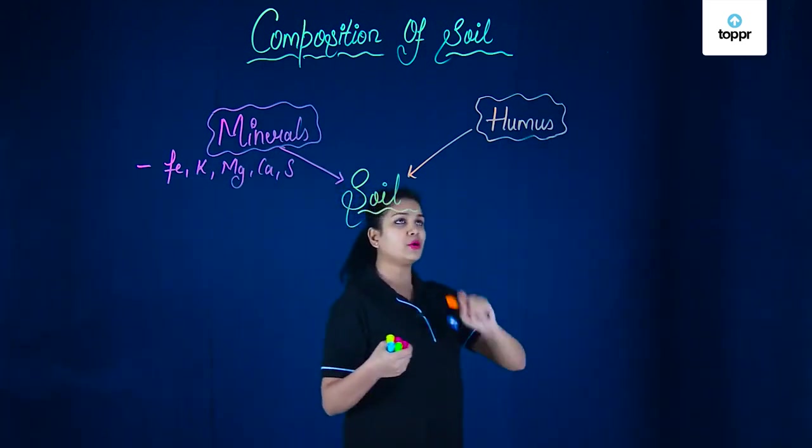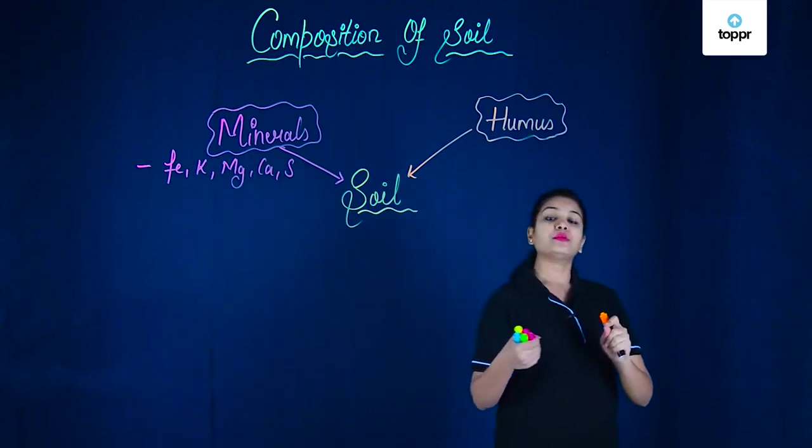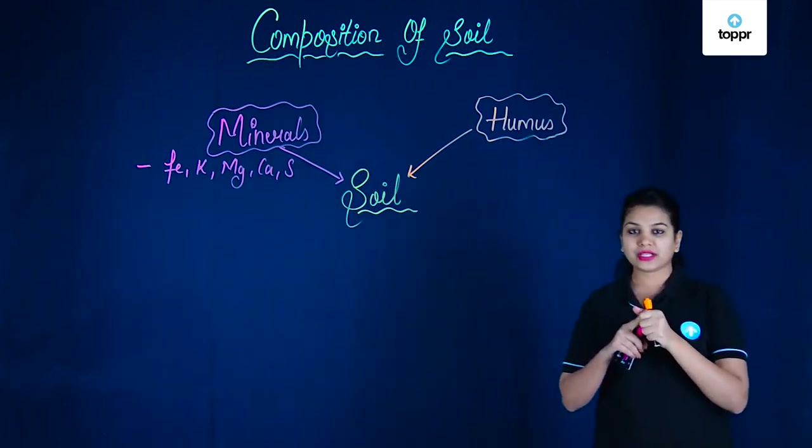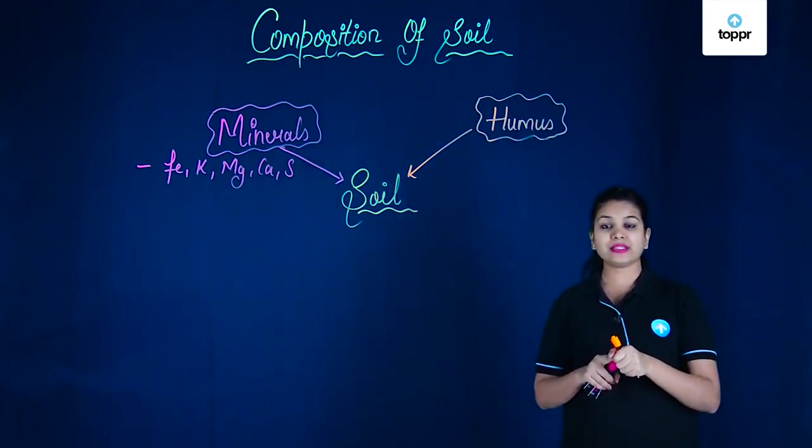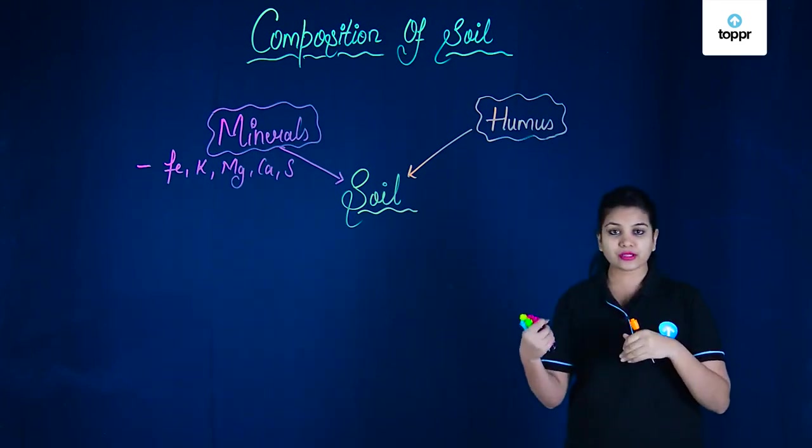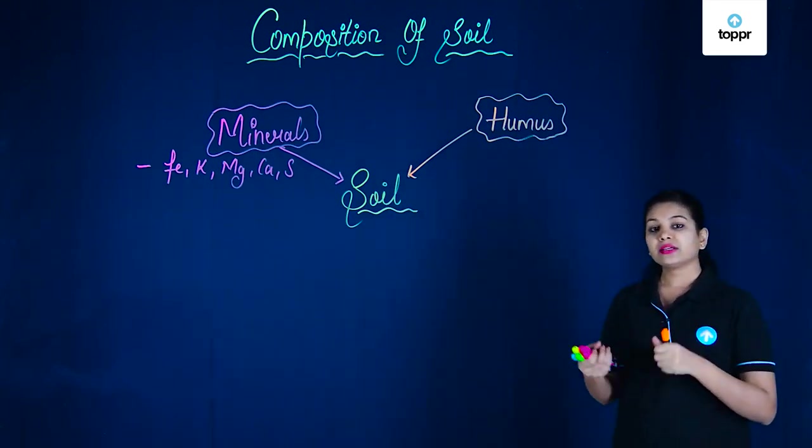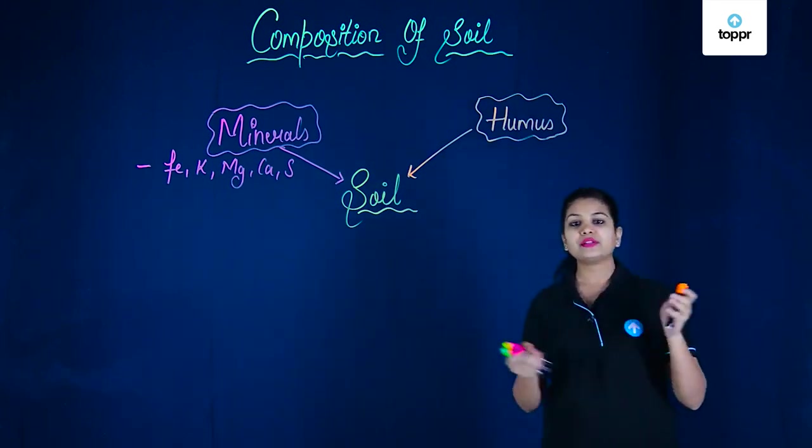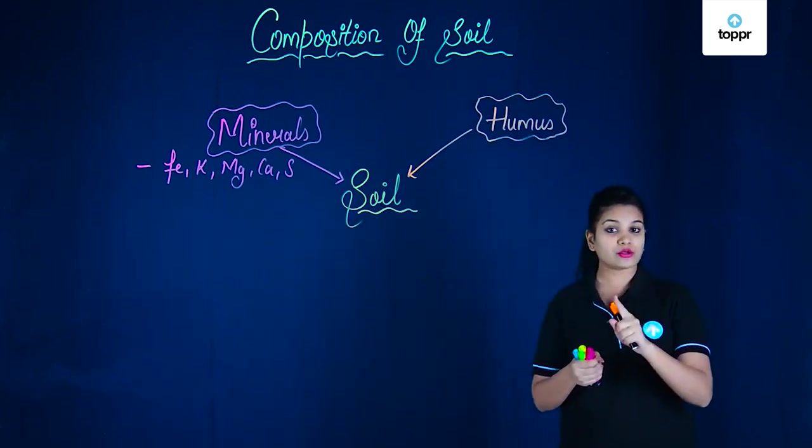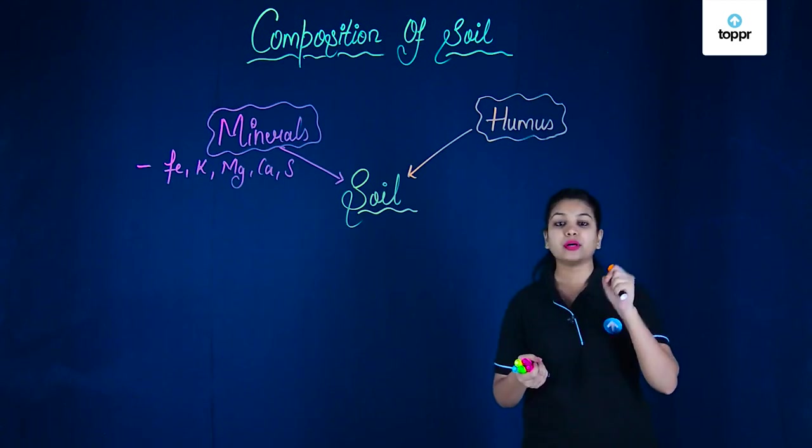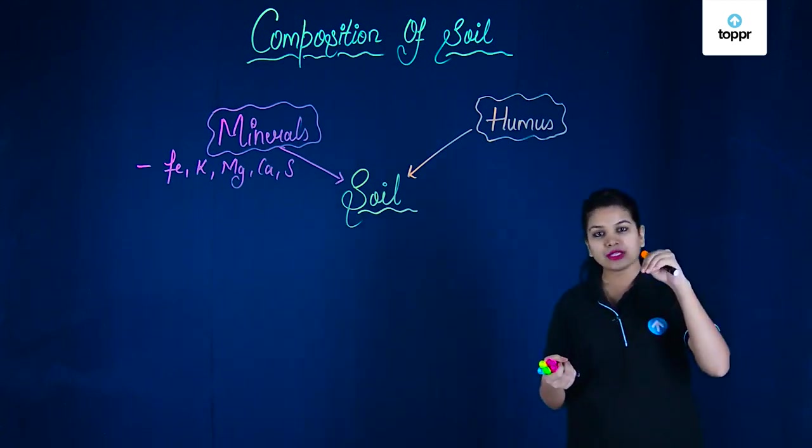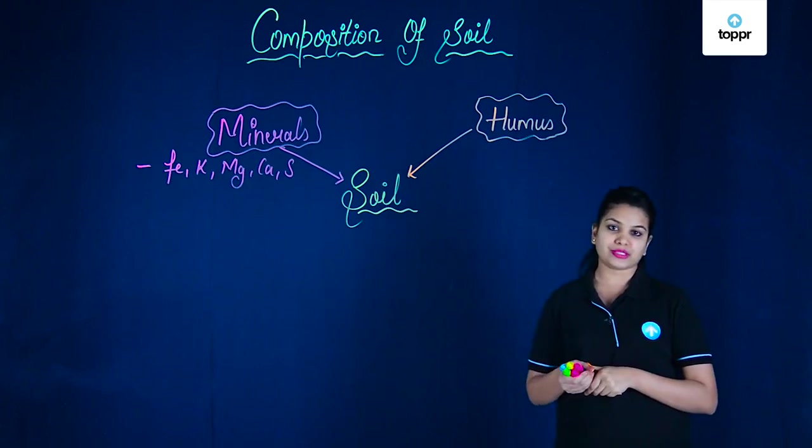Now why is this humus very important? It is so because first of all it improves the texture of the soil, second it improves the fertility up to many folds. Similarly we see that it prevents the flow of minerals along with water and also it improves the water percolation meaning that the water can easily absorb in the soil in the presence of humus.